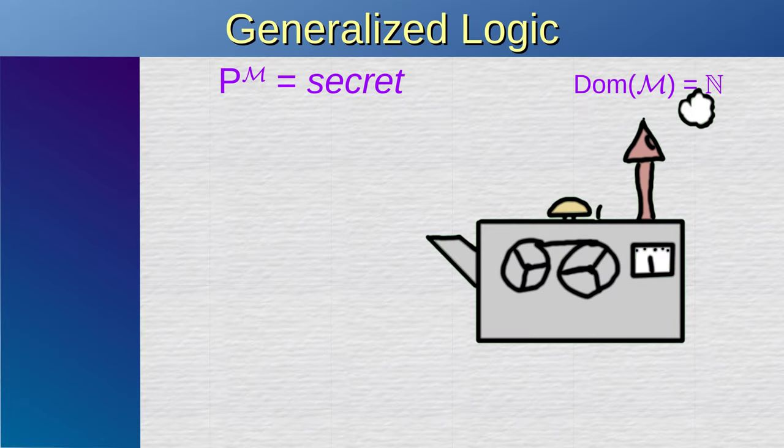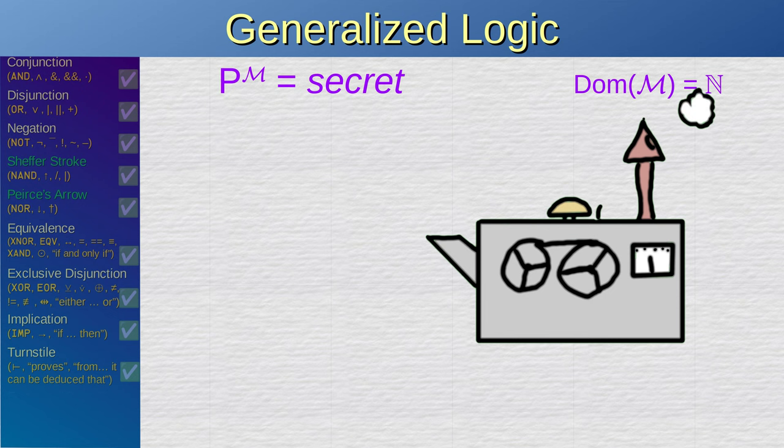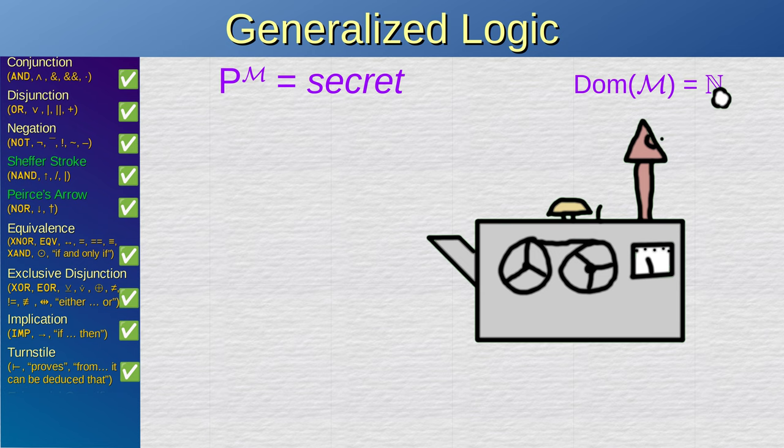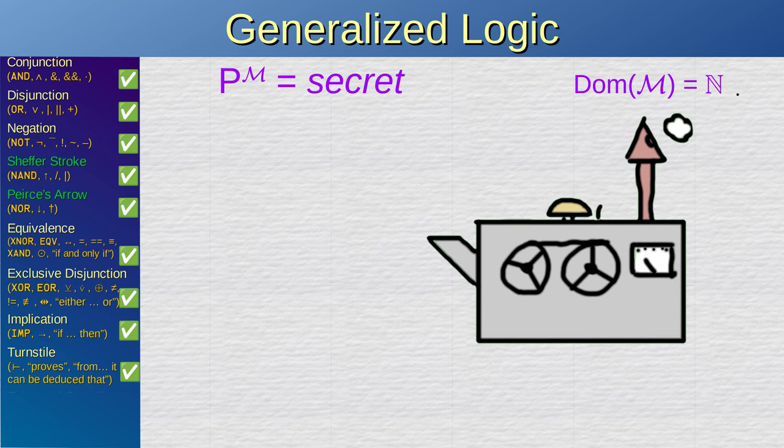Now, suppose you have an abstract machine that takes some inputs and produces a truth value, but you don't know how exactly it works. You input a number, and if it accepts the number, it rings a bell. If it doesn't accept the number, it doesn't ring a bell. The machine can be expressed as a function. Let's call it P.